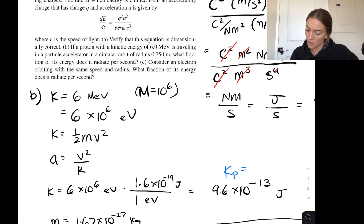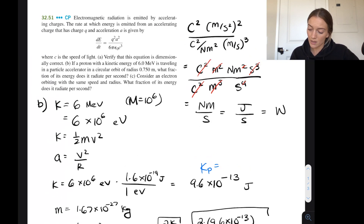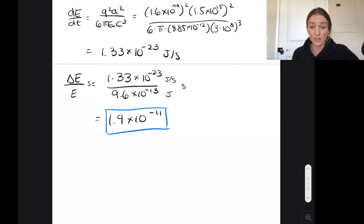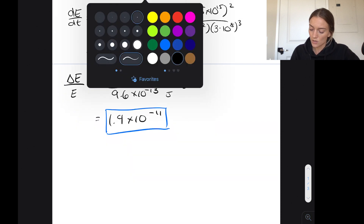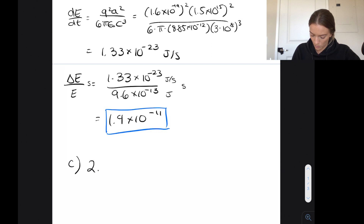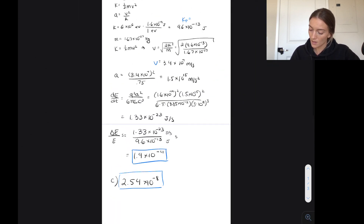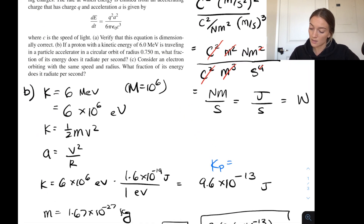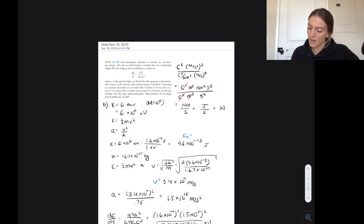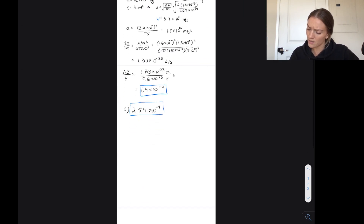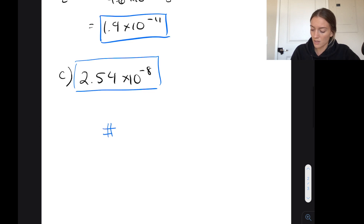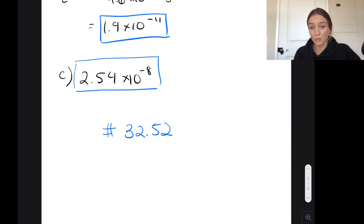Part C considers an electron orbiting at the same speed and radius. I'll just give the answer — 2.54 × 10⁻⁸ — and highly recommend you try it yourself. The electron radiates a larger fraction if it's going at the same speed and same radius. I also recommend trying problem 32.52, which is similar and a great challenge problem to practice unit conversion and powers of 10.